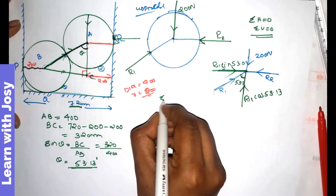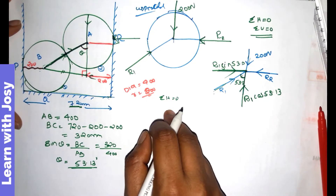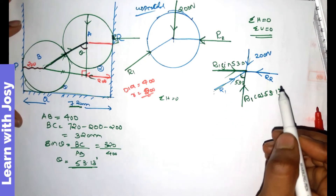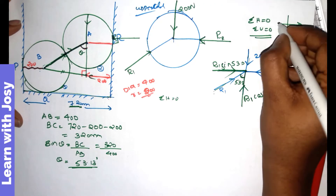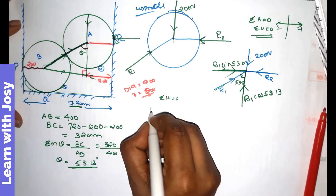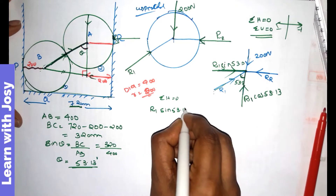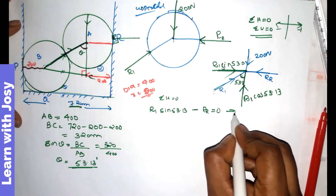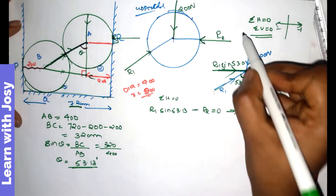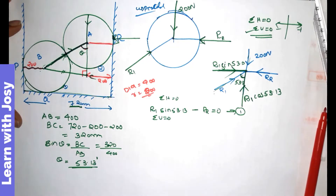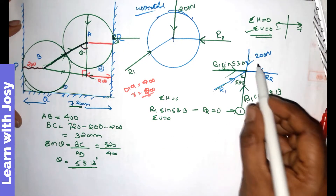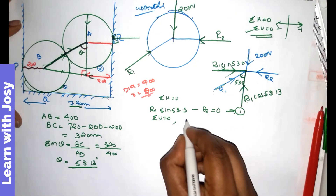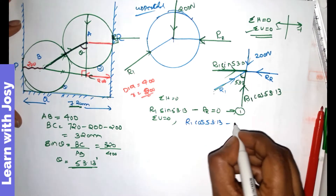Applying sigma X equals zero: the horizontal force on the right is positive, on the left is negative. So R1 sin 53.13 minus RR equals zero. Now applying sigma V equals zero — vertical forces equal zero: R1 cos 53.13 minus 200 equals zero.